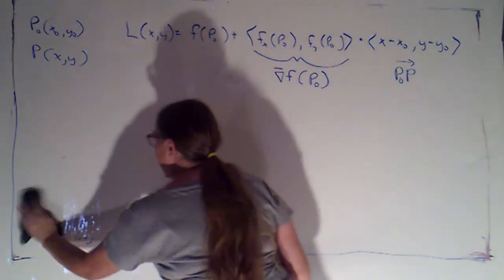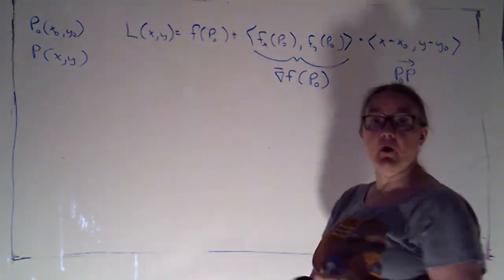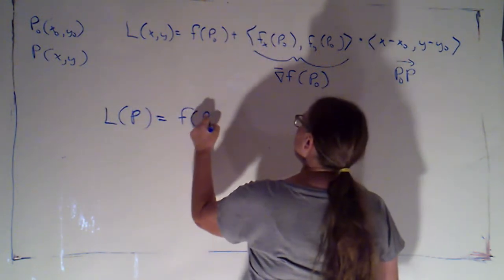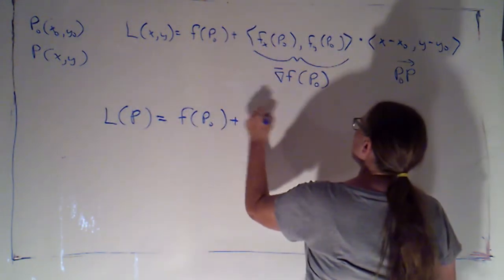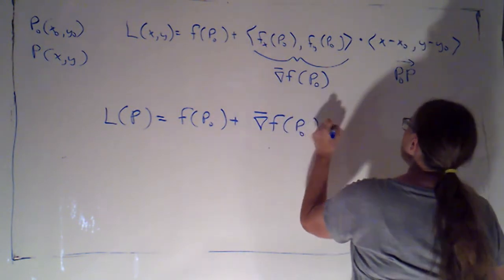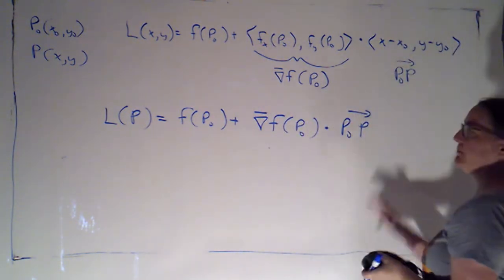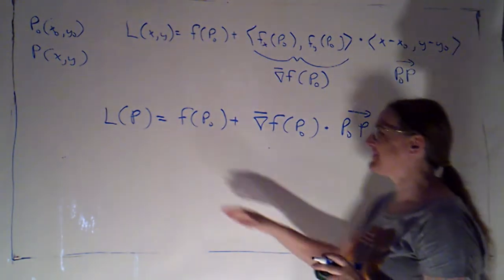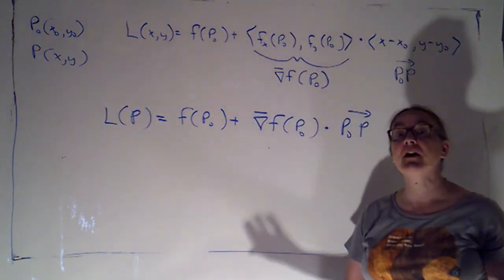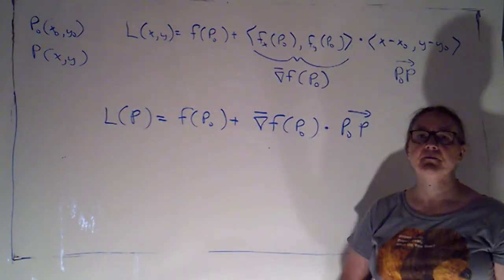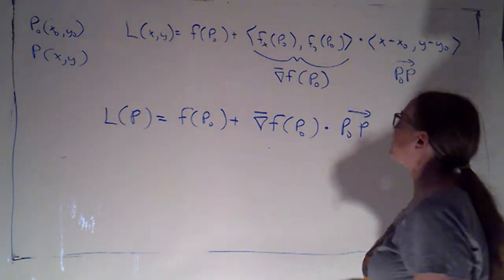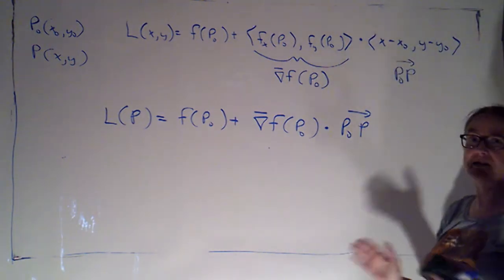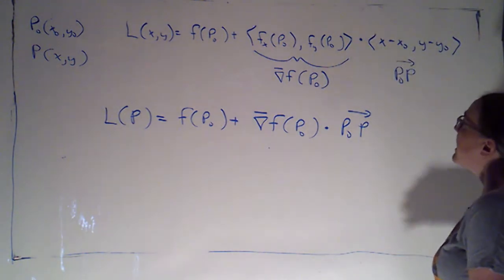So sort of generically, I can say my candidate for the local linear approximation is l of p equals f of p naught plus the gradient of f at p naught dotted with p naught p. I can use that generic form for the candidate for the local linear approximation of a function of two variables or three variables. Often in applications, we're going to be working with specific functions. We'll know how many components we have, and we may prefer to write things out component-wise, and that's totally fine.